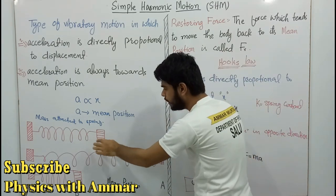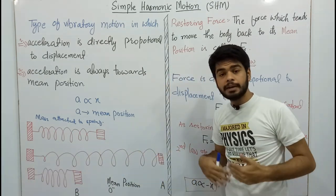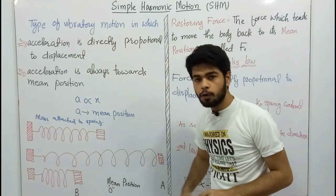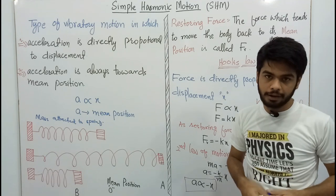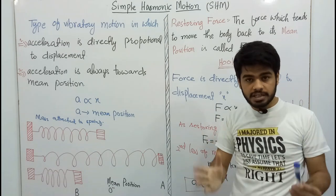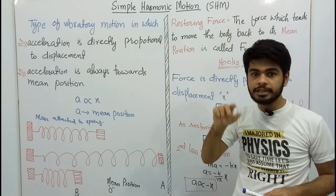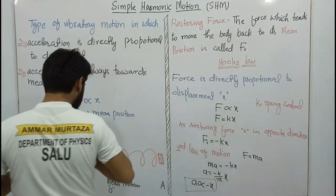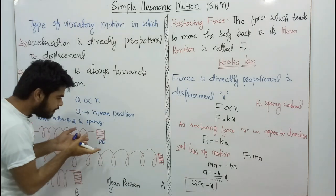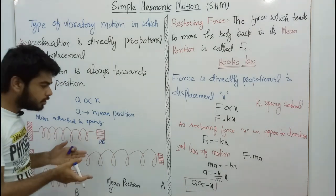When I first stretched the spring and was at this position, the body was at rest. The energy stored was in the form of potential energy. When I was at the equilibrium position, the energy stored was kinetic energy. So at the extreme position, energy is potential energy, and at the mean position it is kinetic energy.